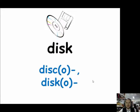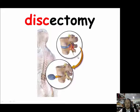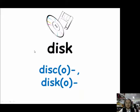When we want to describe things that are disk-shaped, we use the prefixes DISCO (D-I-S-C-O) or DISKO (D-I-S-K-O). Our example for DISCO is discectomy. A discectomy is a surgical procedure to remove all or part of an intervertebral disc. It can also be written as D-I-S-C-O-T-O-M-Y.